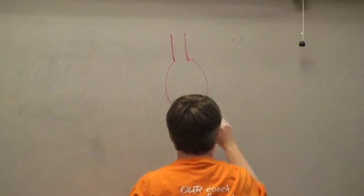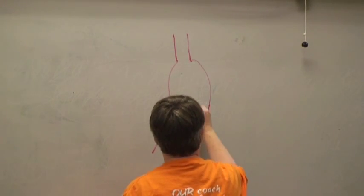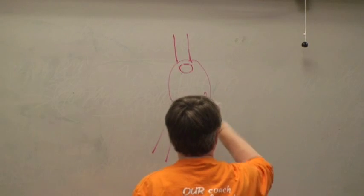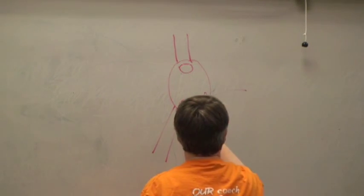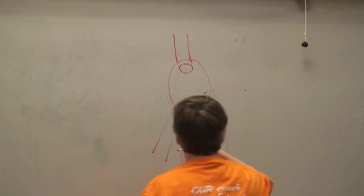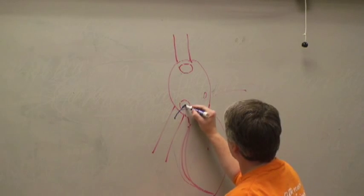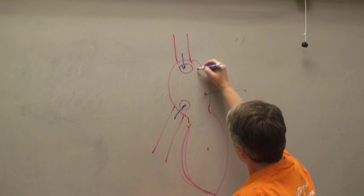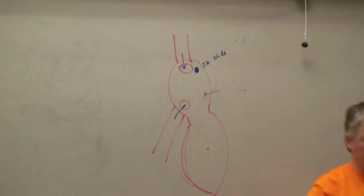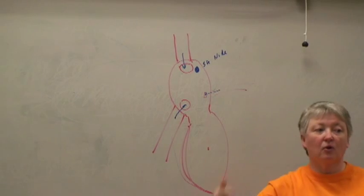Think about the right atrium — with the superior vena cava, the inferior vena cava, and the coronary sinus coming in from the back of the heart, and the right ventricle underneath. As more blood flows back, the atrium stretches. That stretching stimulates the cells of the SA node to depolarize — because the more blood coming back to the heart, the more you have to pump out.